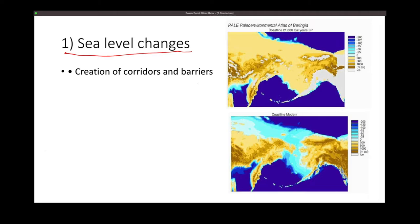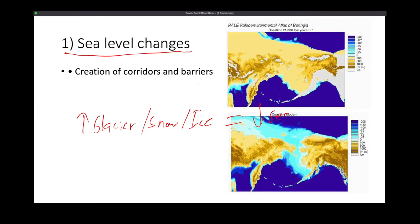When we have glaciers, when we have snow and ice caps, we have lower sea levels, therefore exposing what we call corridors and barriers. If you compare before and after the ice age — for example, in Beringia between Russia and Alaska — there was actually a land bridge that existed because there were lower sea levels, where large mammals and also humans could cross.